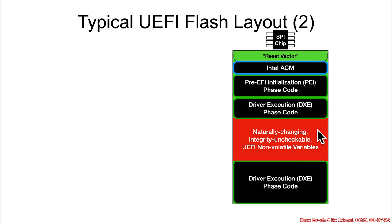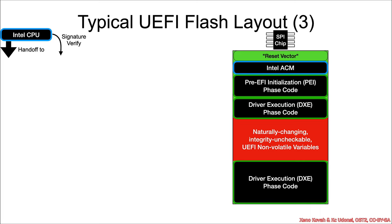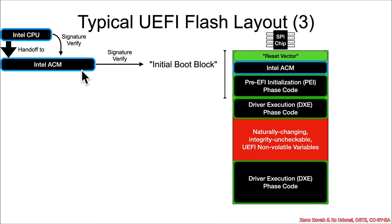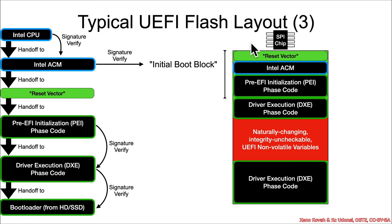The basic breakdown is that there's a reset vector towards the end of the chip — the place where the CPU executes its very first assembly instruction. Then you've got the Intel Authenticated Code Module, the PEI phase code, the DXE code, and usually a split between some DXE phase code on either side of the variables. In the boot chain, the Intel CPU verifies the signature and hands off to the Intel ACM, which verifies the initial boot block covering the reset vector and PEI code.